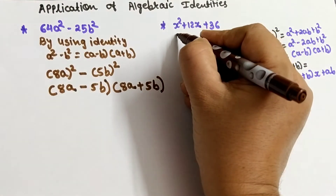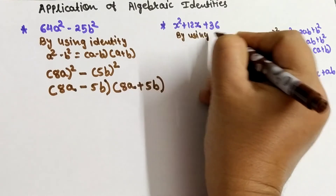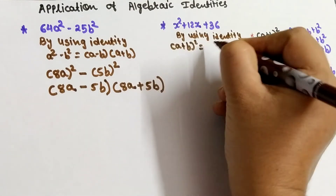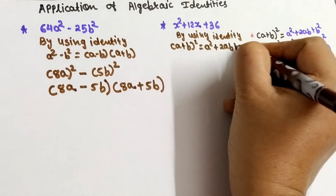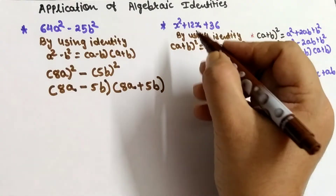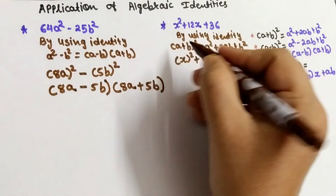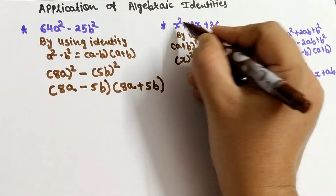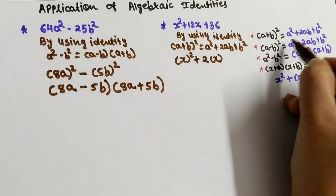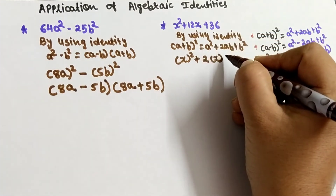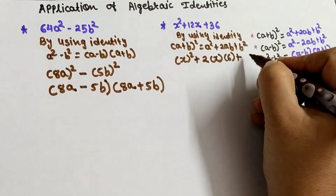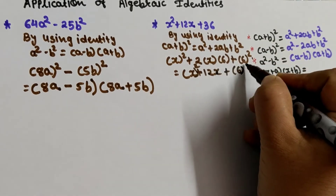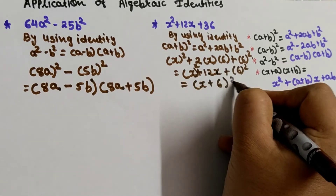By using the identity (a + b)² = a² + 2ab + b², we write x² + 2·x·6 + 6². The square root of the first term is x and the square root of the last term 36 is 6. So 2 × x × 6 = 12x, which matches the middle term. Therefore x² + 12x + 36 = (x + 6)².